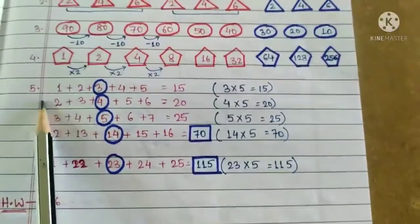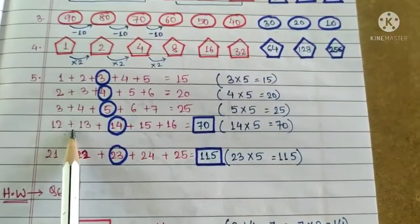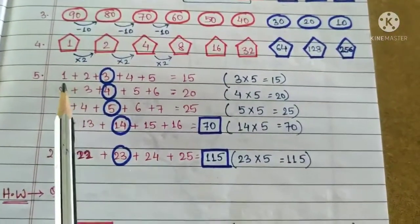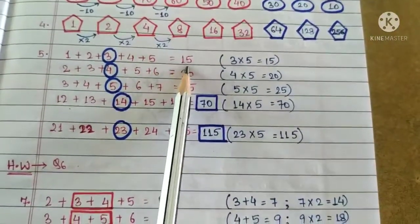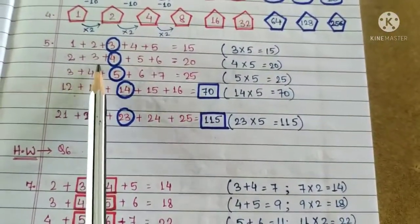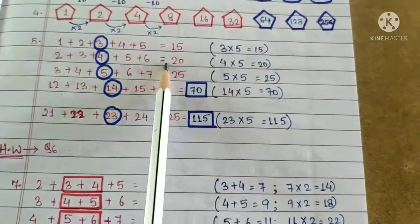Now in the 5th question, there are set of numbers. Here, how will we identify the pattern? Let us have a look. 1 plus 2 plus 3 plus 4 plus 5 equals to 15. Again, 2 plus 3 plus 4 plus 5 plus 6 equals to 20.